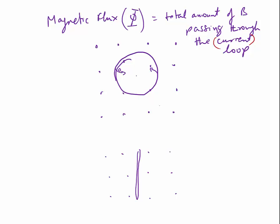You can see a couple of things right away. If the area of the loop is small it catches less; a larger area catches more. If the magnetic field is stronger, more magnetic field passes through the loop. And if the angle is 90 degrees, you won't catch any. So the flux equals the magnitude of the magnetic field times the effective area of the loop. The orientation matters — a large area held edge-on catches nothing — which is where the word 'effective' comes from.